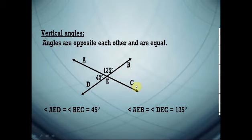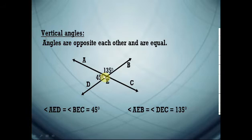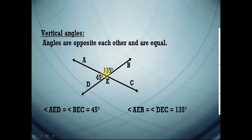When two lines intersect at one point, they form four angles. Each pair of opposite angles is called vertical angles, and vertical angles are equal in measure. For example, angle AEB and angle DEC are opposite each other — they are vertical angles and each measures 135 degrees. Also, angle AED and angle BEC are opposite each other — they are vertical angles and each measures 45 degrees.